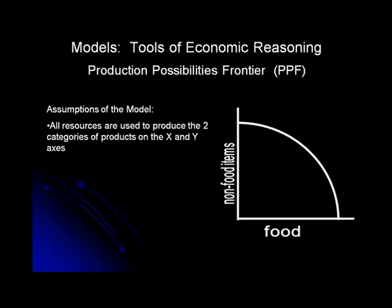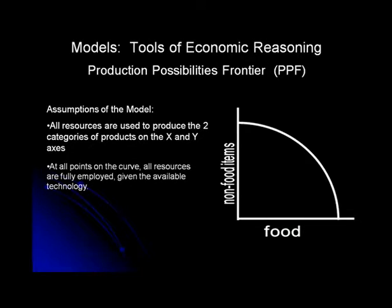Our model looks at a situation in which all the resources in the economy — all the land, labor, capital, and entrepreneurship — are being used to produce either food or things other than food. The second assumption of the model is that the curve or frontier represents the maximum production possible at this point in time. A frontier is the farthest edge, so the curve on the graph represents the most that could possibly be produced with our current technology and all available resources.